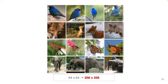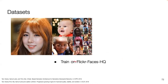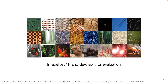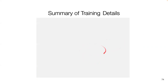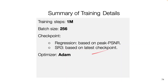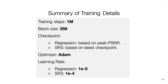In terms of datasets, for training they use the Flickr Faces HQ dataset consisting of 70,000 images, and evaluate on the CelebA-HQ dataset consisting of 30,000 images. For natural image synthesis, they use the ImageNet dataset, specifically ImageNet 1K consisting of over a million photos of 1,000 different object classes. Both the baseline regression model and SR3 are trained with one million training steps with a batch size of 256. The regression baseline model checkpoint is based on peak PSNR metric, whereas SR3 uses its latest checkpoint. They use an Adam optimizer with the corresponding learning rates for both.